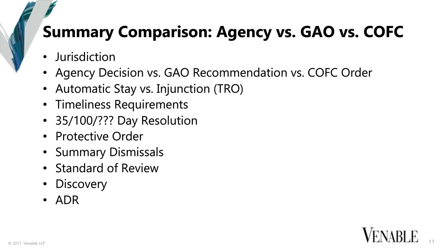The timeliness requirements at the agency and the GAO are firm — they're hard deadlines. You have a little bit more flexibility with the court. Typically, if you file an agency protest, it's going to get resolved in 35 days. The GAO is going to get resolved in 100 days, and the Court of Federal Claims — it's hard to predict when you actually get a decision.